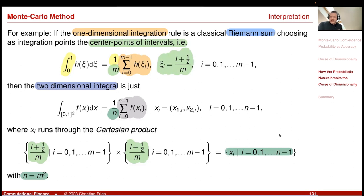This could also be done with Simpson's rule, where you have the product of weights from each dimension in front of each function evaluation.